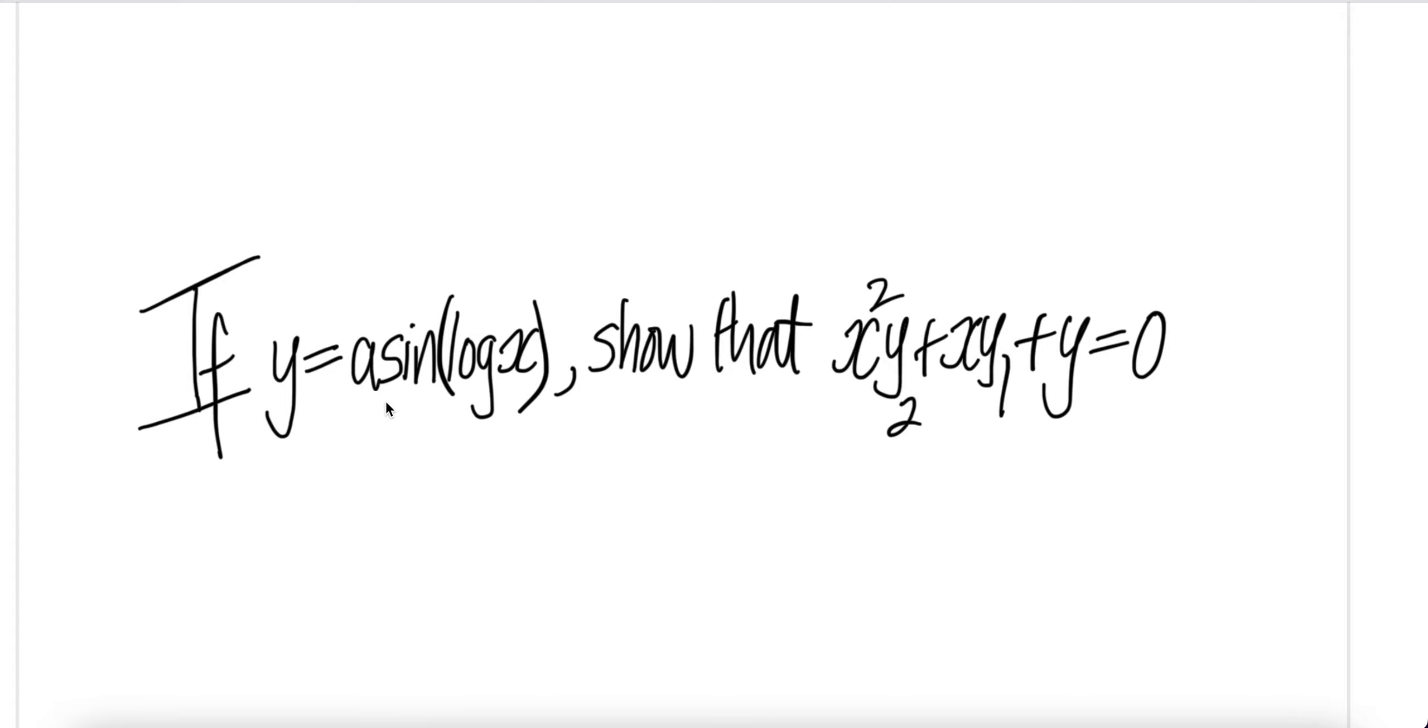If y equals a sin(log x), show that x²y₂ + xy₁ + y = 0. Here y₁ means dy/dx and y₂ means the second derivative with respect to x.